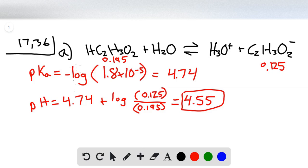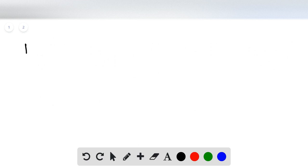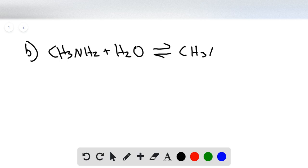Now for part B, we are given concentrations of methylamine, which is going to react with water to form the conjugate acid. The concentrations that it gives are 0.255 for methylamine and 0.135 for the conjugate acid.